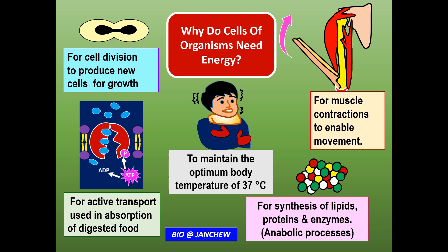This diagram also shows why cells of organisms need energy. Cells need energy to carry out anabolic processes such as the synthesis of lipids, proteins, and enzymes — the synthesis of complex molecules from simpler molecules. They also need energy to maintain the optimum body temperature of 37 degrees Celsius, to carry out muscle contractions to enable movement, for cell division to produce new cells for growth, and for active transport of substances such as in the absorption of digested food.